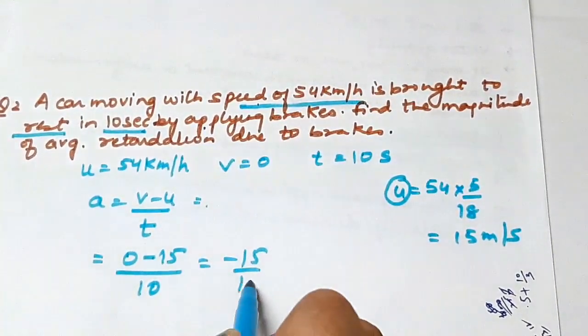Acceleration is v minus u upon t. What is the value of v? V is 40, u is 0, and time is 1 by 6. When we calculate, 40 is in the numerator and it becomes 6 by 1. So the answer is 240 km per hour square. Because we kept velocity in km and converted time to hours, that's why km per hour square. I hope this is clear.